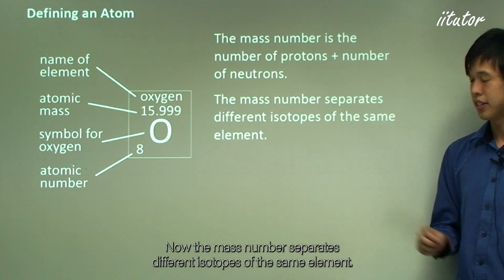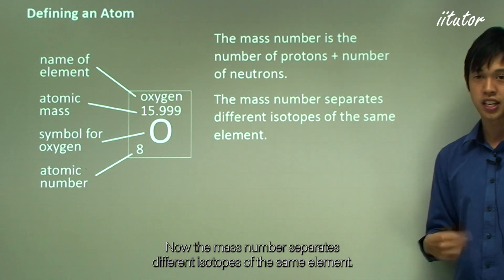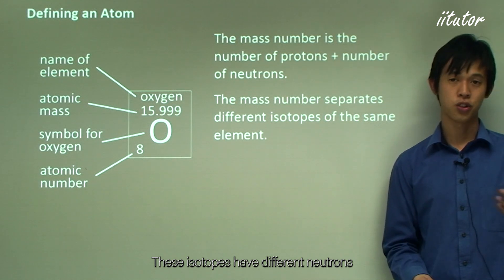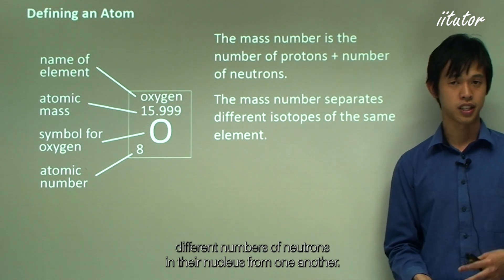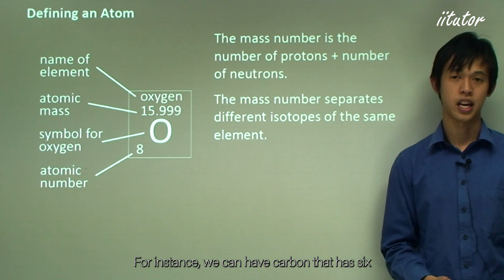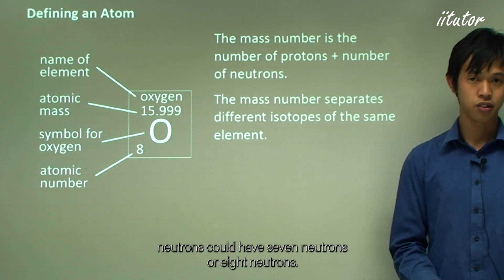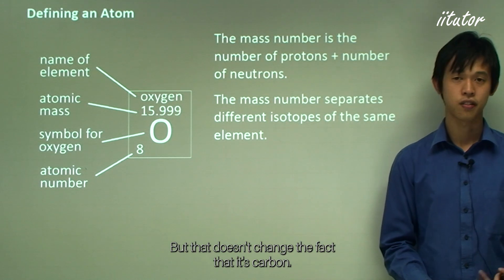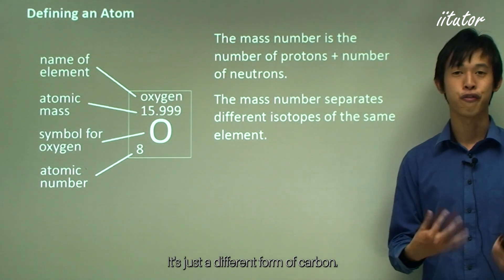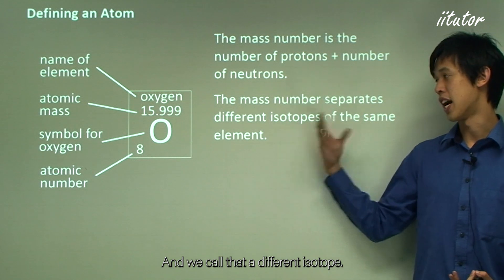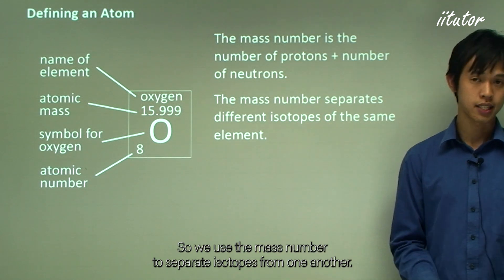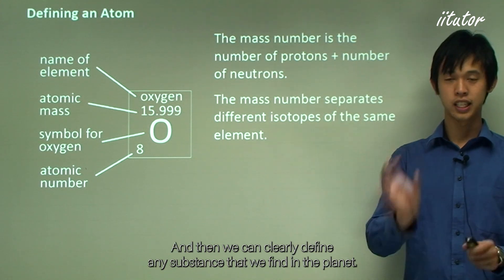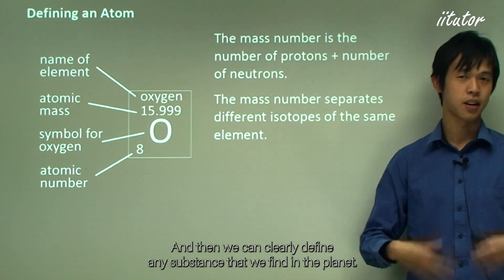The mass number separates different isotopes of the same element. Isotopes have different numbers of neutrons in their nucleus from one another. For instance, carbon can have six, seven, or eight neutrons — that doesn't change the fact that it's carbon, just a different isotope. We use the mass number to separate isotopes from one another.